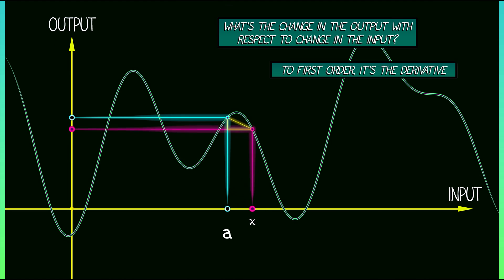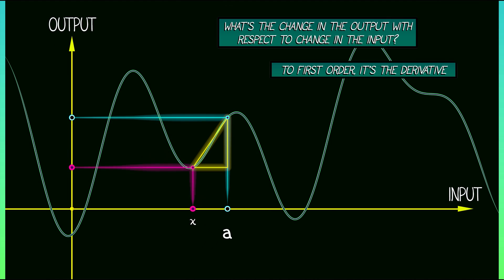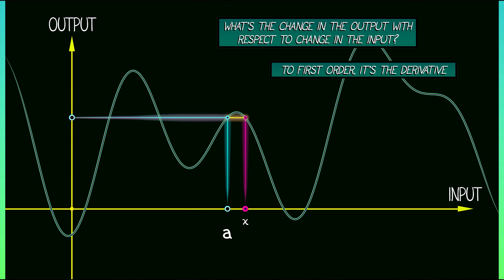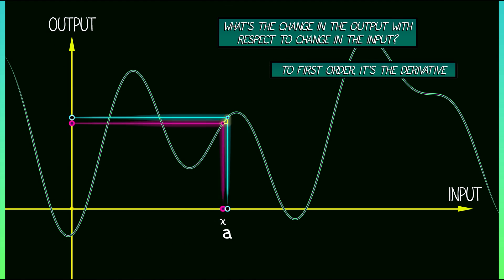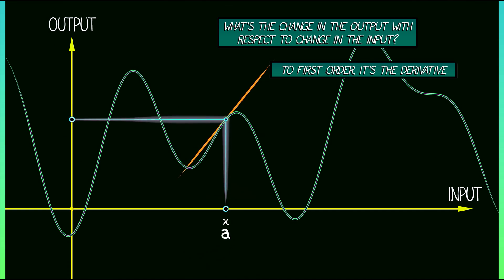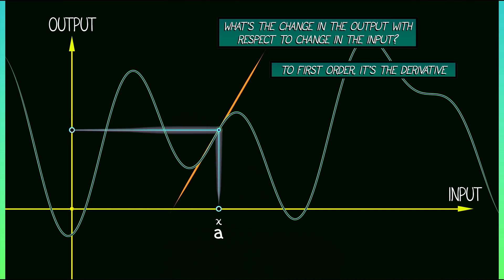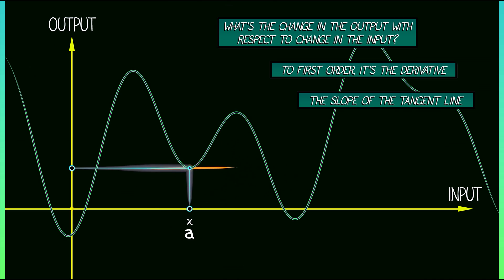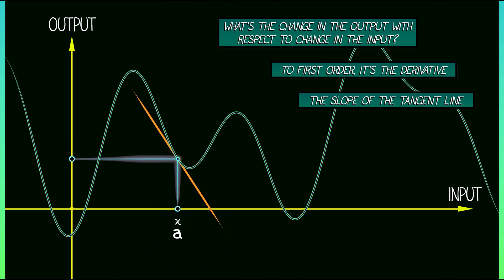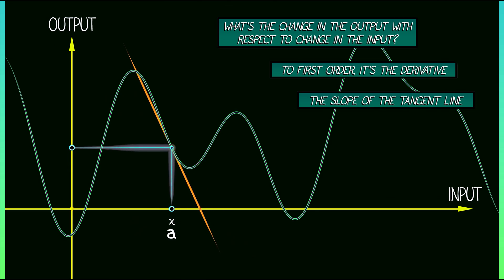You change the input by a certain amount, and the output, to first order, changes by the derivative times that change in the input. Now that change in output divided by the change in input is a slope — the slope of the tangent line in the limit.